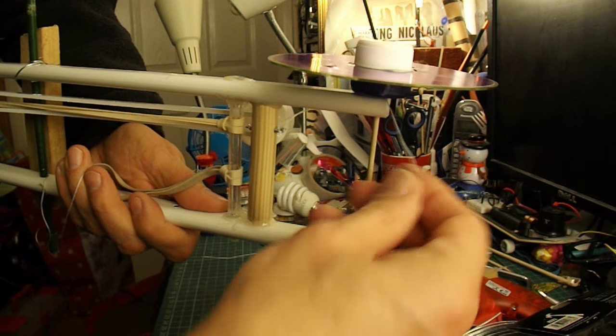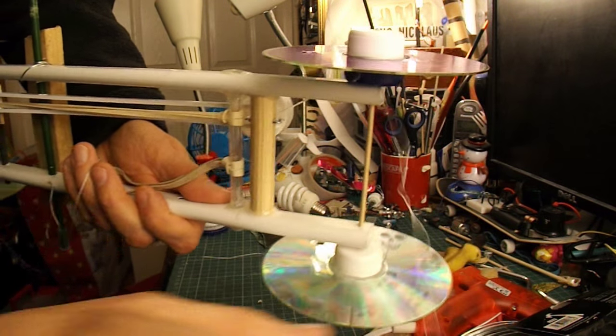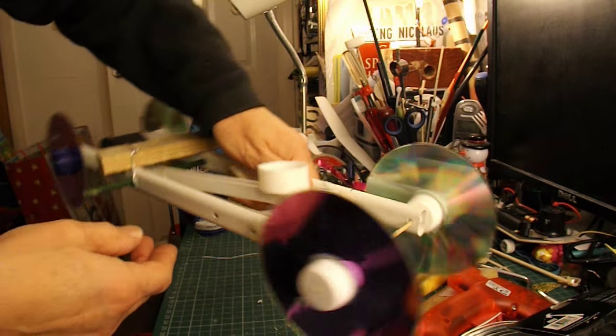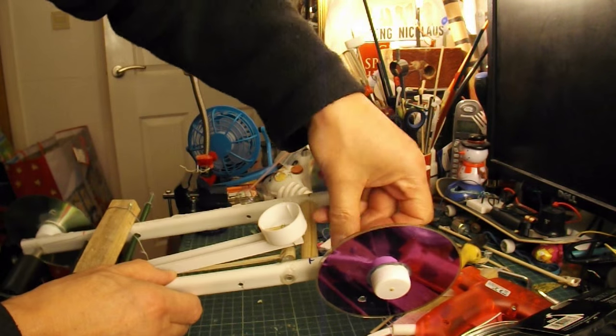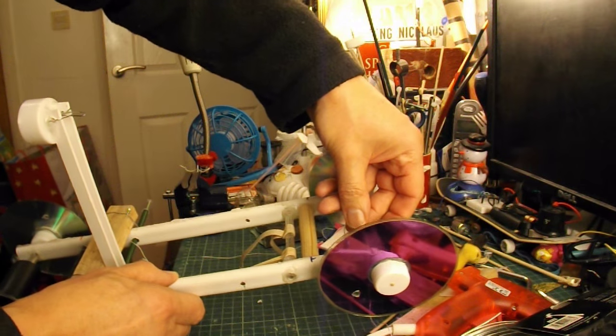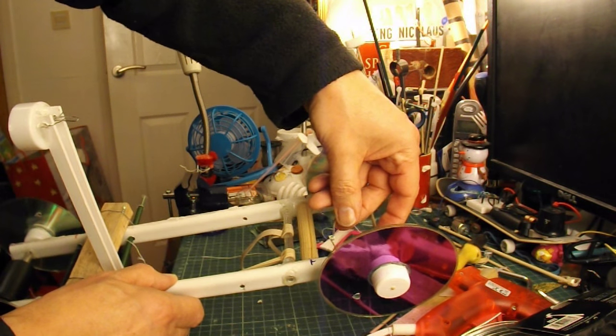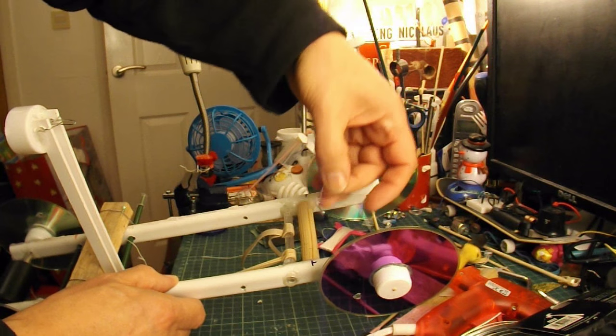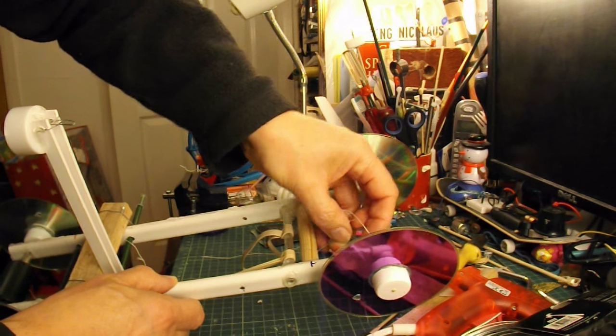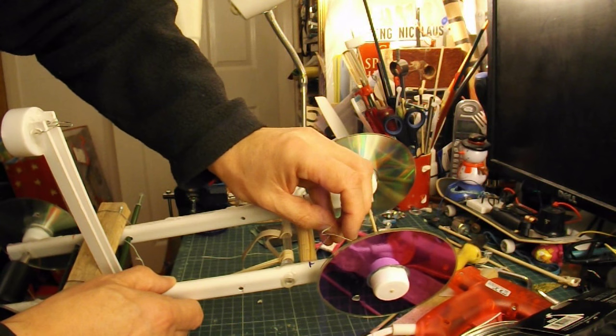So when we pull the cotton, it'll release the catapult. You probably couldn't see that, but that's it. It just pulls it straight out of that little hole. So that's our release mechanism.